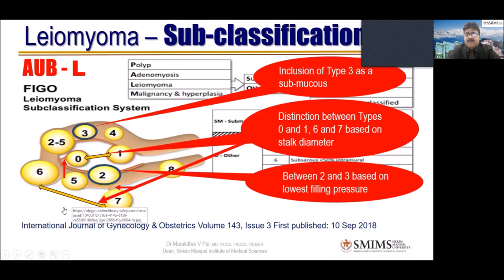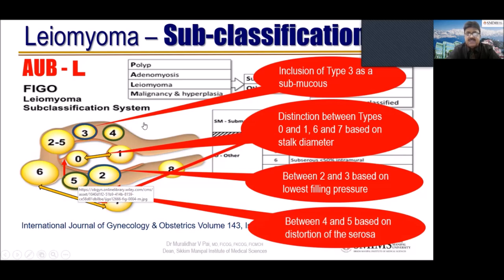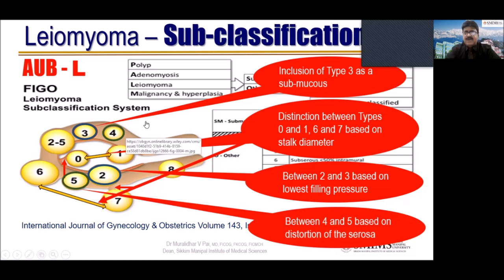Finally, they have made a distinction between types 4 and 5 based on distortion of the serosa. Type 4 is almost touching the serosa, whereas type 5 has come out of the serosa — and how much the uterine shape is distorted. Again, this is not of much practical importance according to me, but every time they meet, they have to classify and subclassify. It is a bit like hair-splitting, with some importance for research. The most clinically meaningful distinction is based on stalk diameter, and the fertility implication of type 3 as submucous.